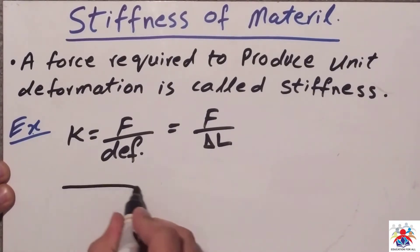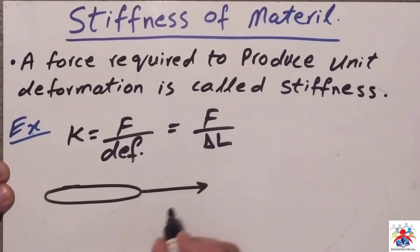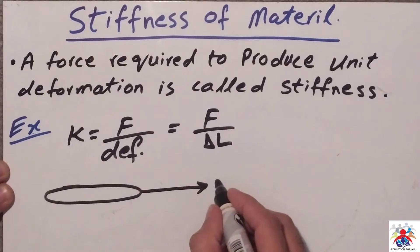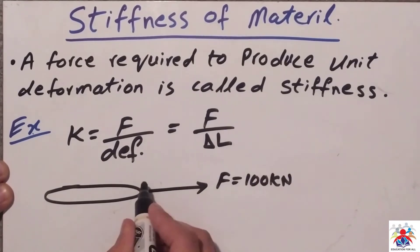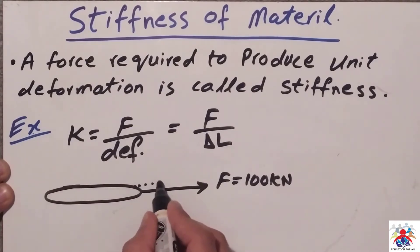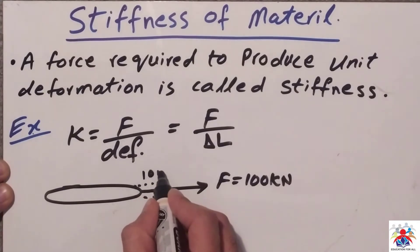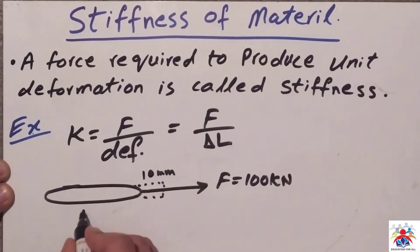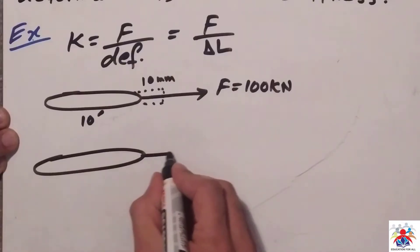In the first example, we have a steel rod with a force acting on it, trying to pull that rod. The force F is equal to 100 kilonewtons, creating a deformation of 10 millimeters. The length of the rod is 10 feet.